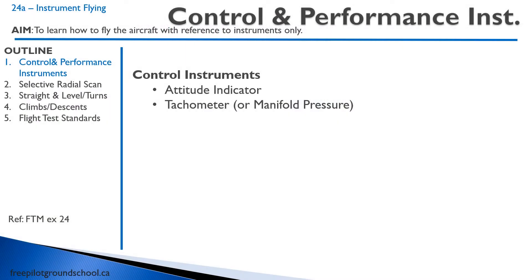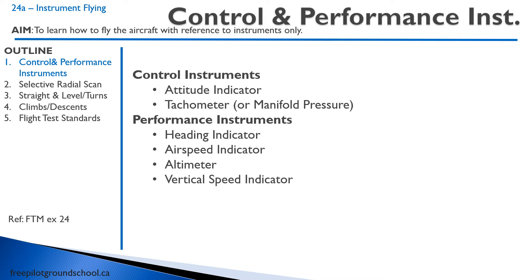Let's review some instruments. First, we have our control instruments: the attitude indicator and tachometer. Then we have our performance instruments: heading indicator, airspeed indicator, altimeter, and vertical speed indicator. One tells us where we are in space — your attitude indicator — and the other tells us how the aircraft is performing.